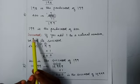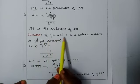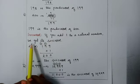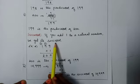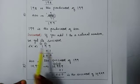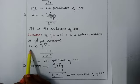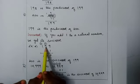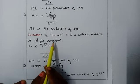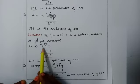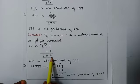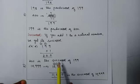The next concept is successor. If you add 1 to a natural number we get its successor. Successor is nothing but the next number. To find the successor of a given number we add 1. For example, let us consider the number 199. To find the successor of this we will add 1. When we add 1 to 199 we will get 200. So 200 is the successor of 199.